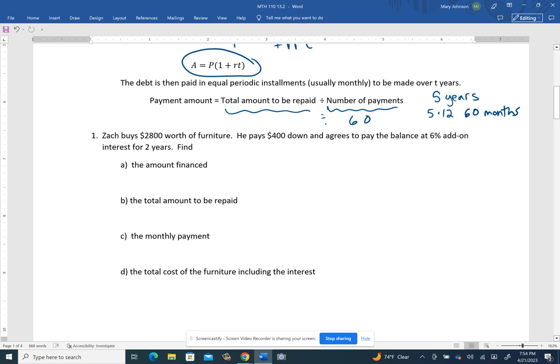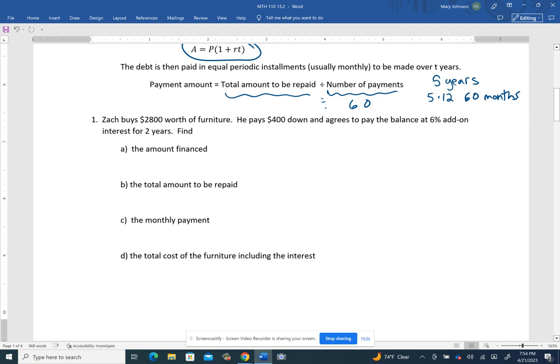In this problem, we have that Zach is buying $2,800 worth of furniture. And he's going to put $400 down, which means he pays that right now.